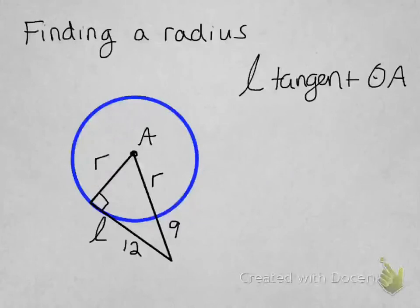If it's tangent to circle A, then this has to be a right triangle, which means we can use Pythagorean theorem to solve. So we have r squared plus 12 squared equals (9 plus r) squared.